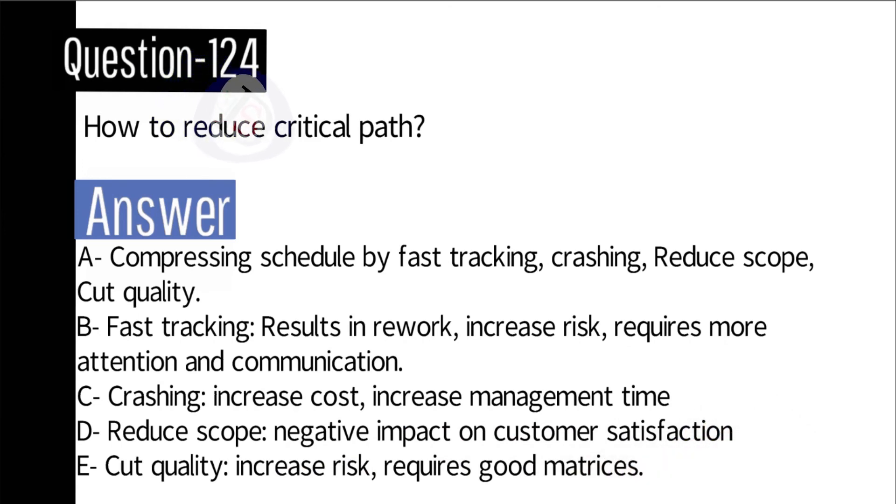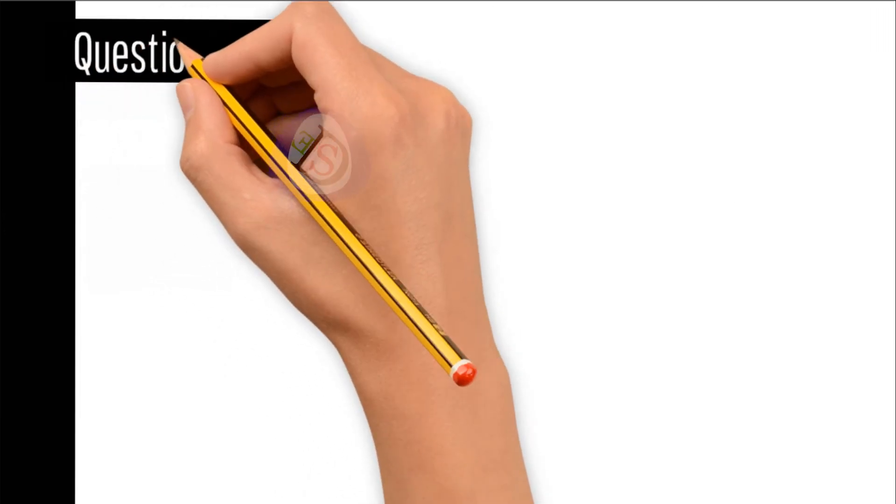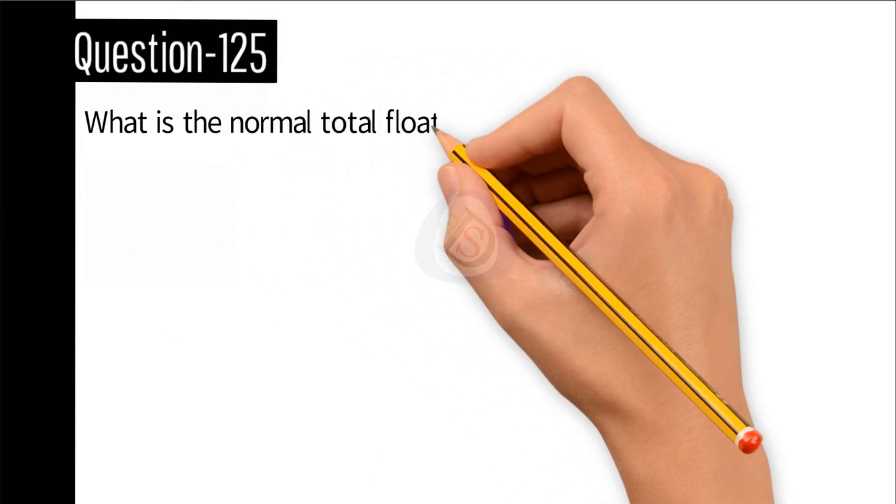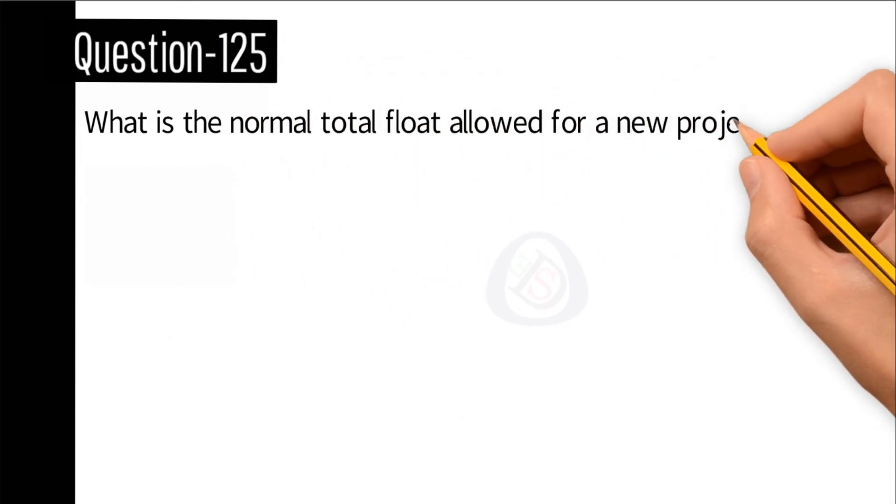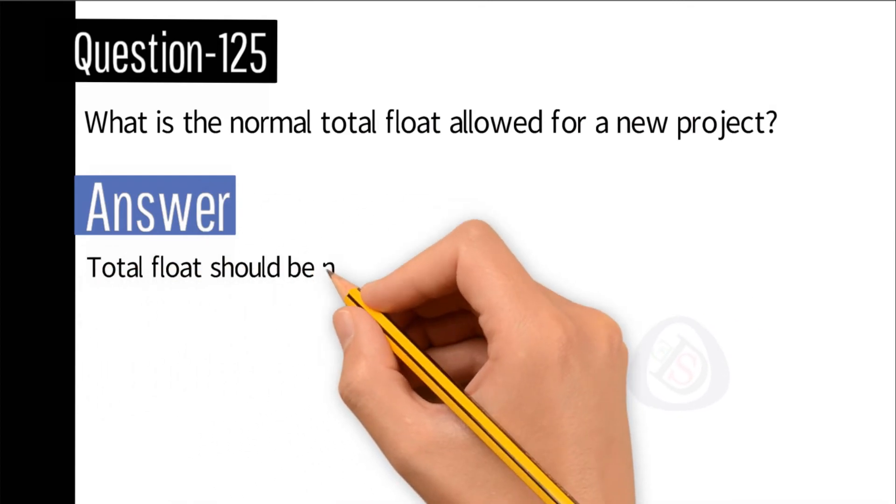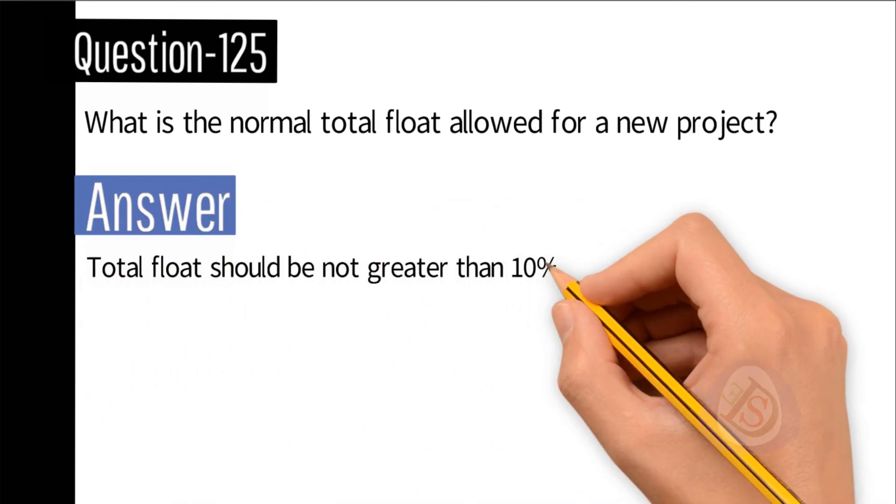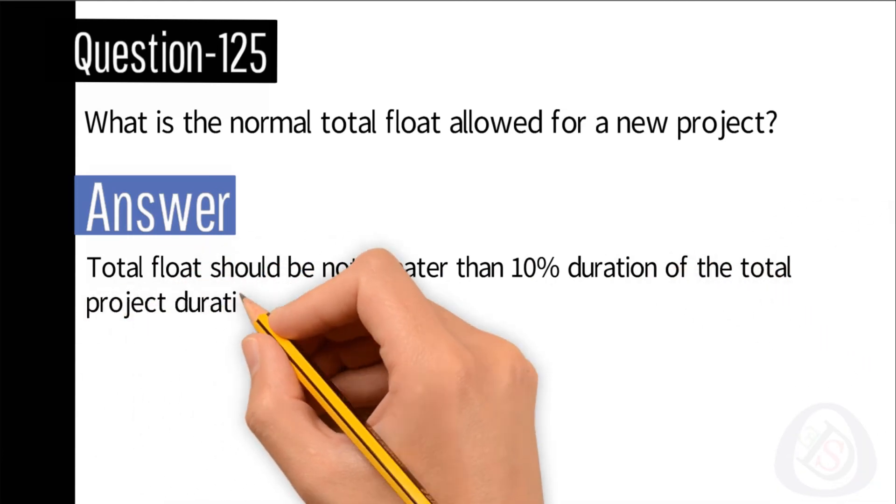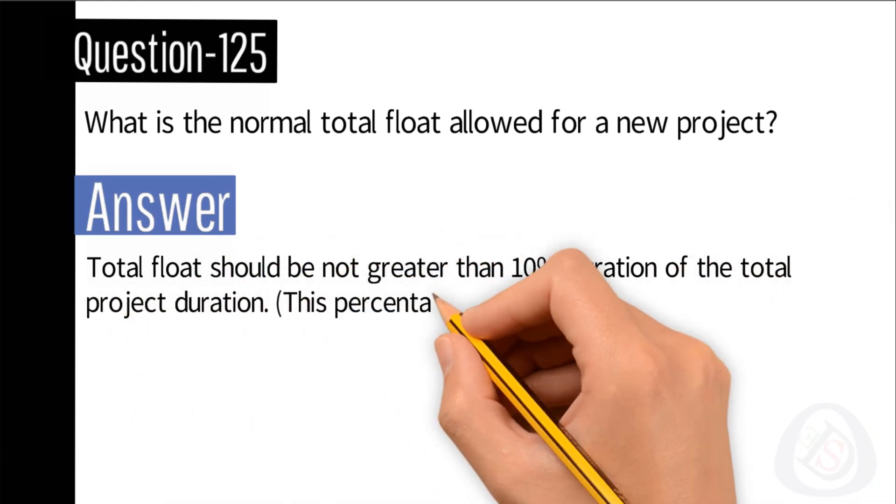Question number 125: What is the normal total float allowed for a new project? Answer: Total float should be not greater than 10% duration of the total project duration. This percentage is subjective.